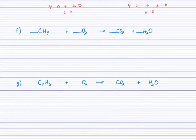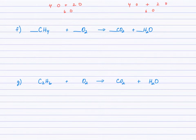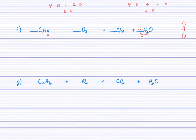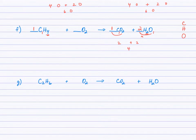Moving on to example F — we're into combustion reactions. I recommend balancing in the order carbon, hydrogen, then oxygen. For CH4 + O2 → CO2 + H2O: 1 carbon on each side — balanced. There are 4 H's in CH4; on the right there are 2 in H2O, so 2 times 2 = 4, putting a 2 in front of H2O. Now oxygens: the CO2 gives 2 and 2 times 1 gives 2 from H2O, totaling 4. CH4 has no oxygen, so all 4 oxygens come from O2; putting a 2 in front of O2 gives 2 times 2 = 4.